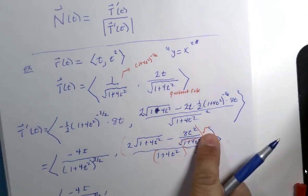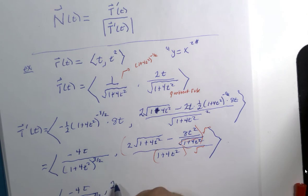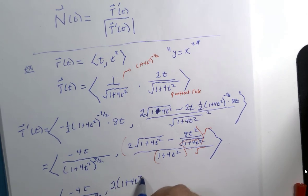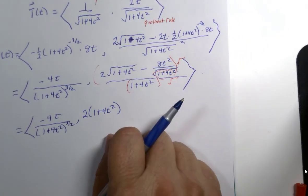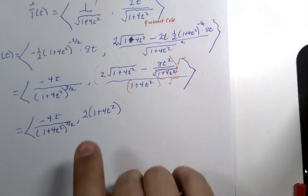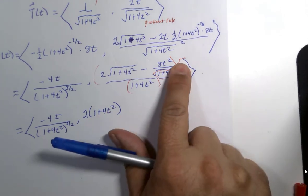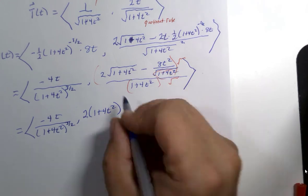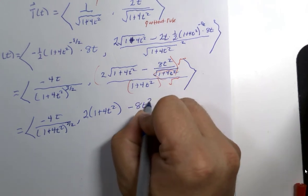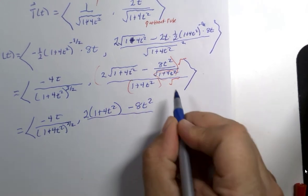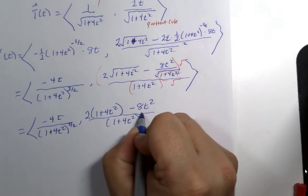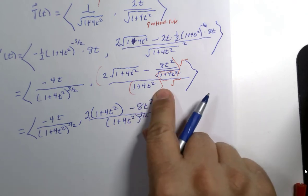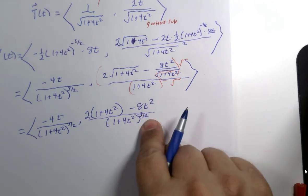First component is done, 1 plus 4t squared to the three halves power. We are having fun right now, right? And when you multiply this, it's going to be 2 times 1 plus 4t squared. This is an intermediate algebra trick. This times this and this times this is going to be minus 8t squared all over 1 plus 4t squared to the three halves power.